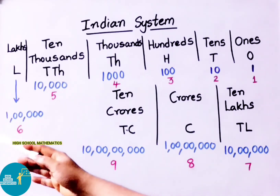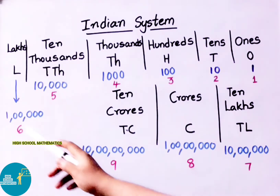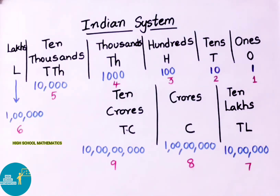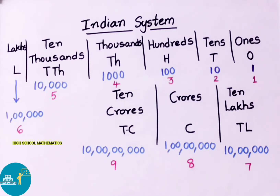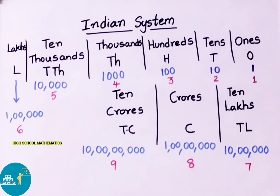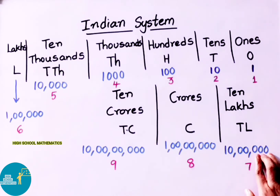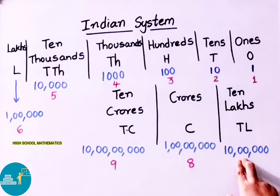One lakh means one followed by five zeros. Here, we must place commas to separate the periods: ones period is separate, thousands period is separate, and lakhs period is separate. Each period — ones period, thousands period, lakhs period — is separated with a comma.